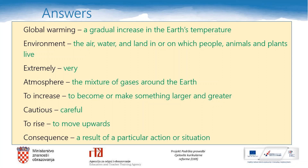Here are the answers. Global warming: a gradual increase in the Earth's temperature. Environment: the air, water and land in or on which people, animals and plants live. Extremely: very.